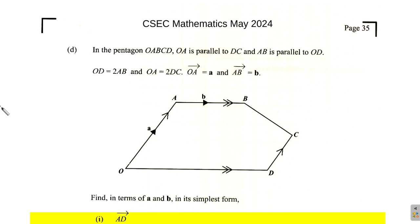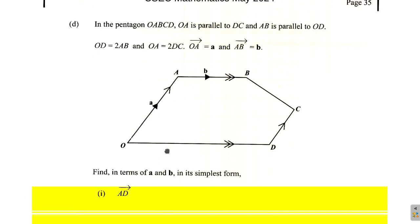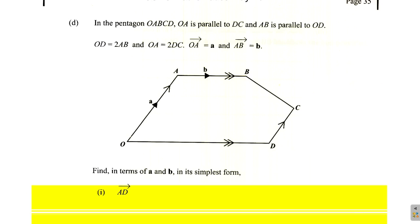Find in terms of a and b, in its simplest form, AD. Let's see what happens here now. So the vector AD, here's our vector.